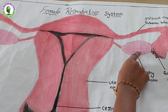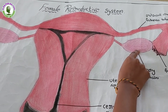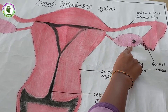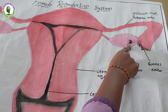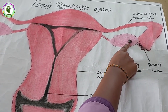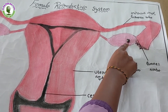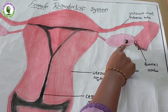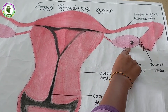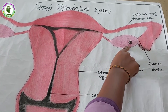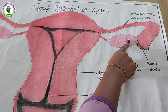Each follicle contains a single ovum. When an ovum is mature, the follicle ruptures at the surface of the ovary and the tiny ovum is flushed out. This release of the egg or ovum is called ovulation.